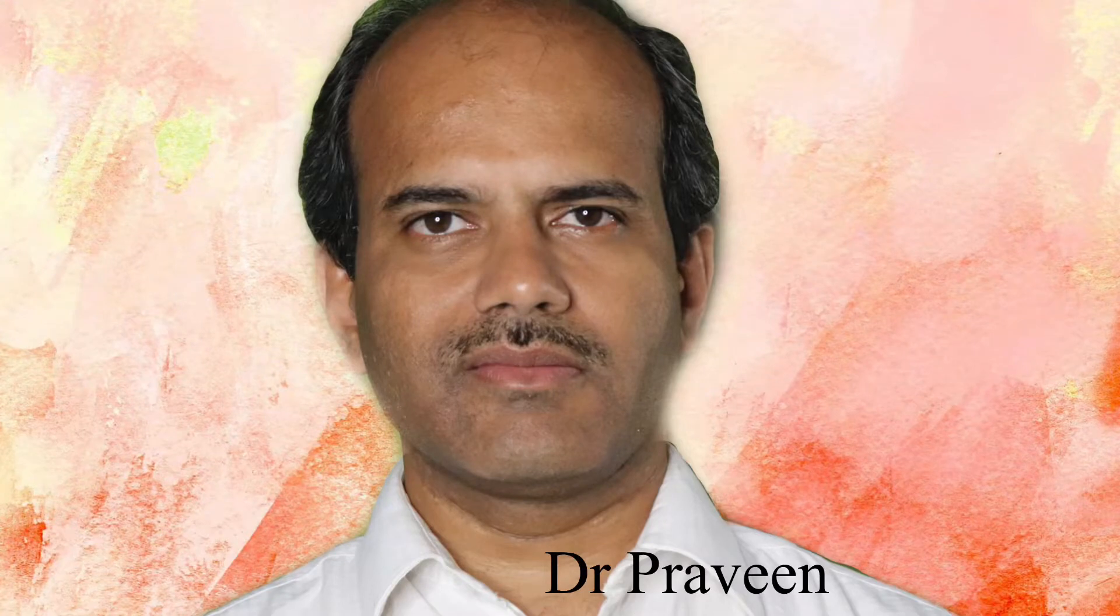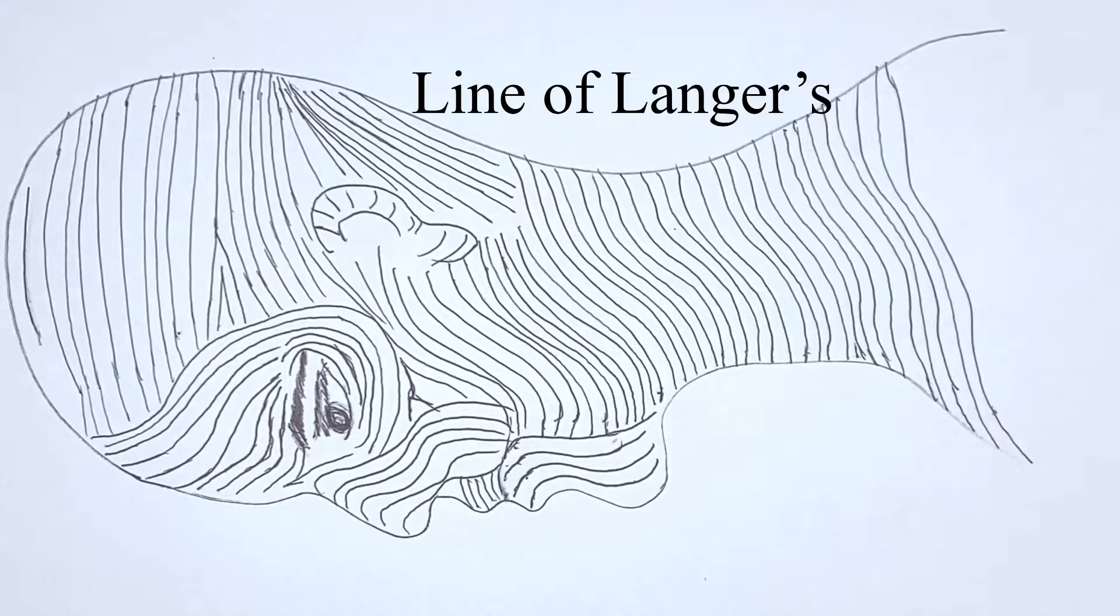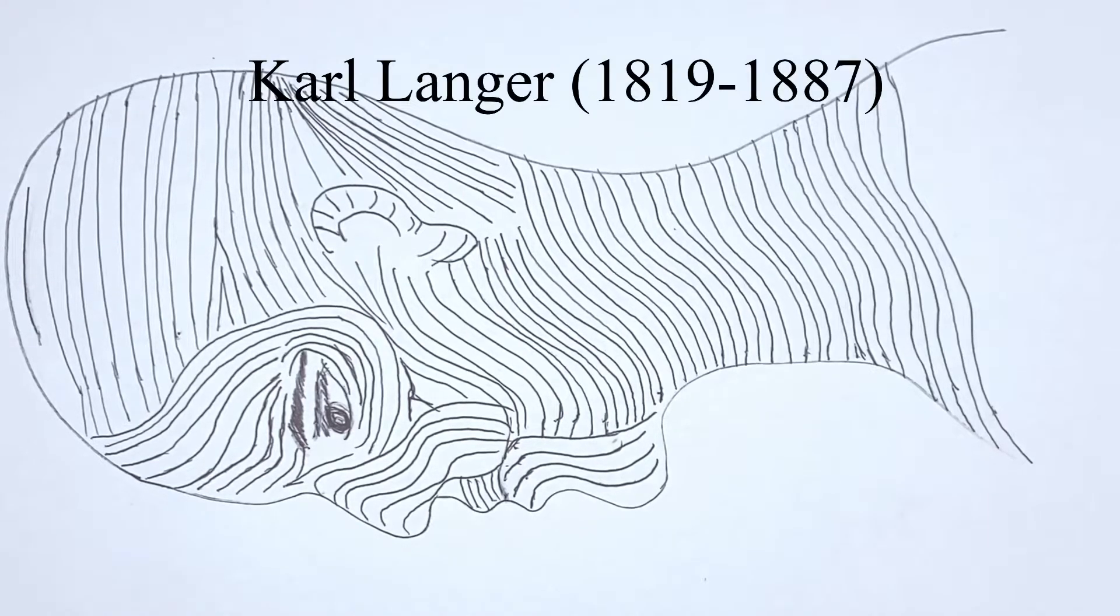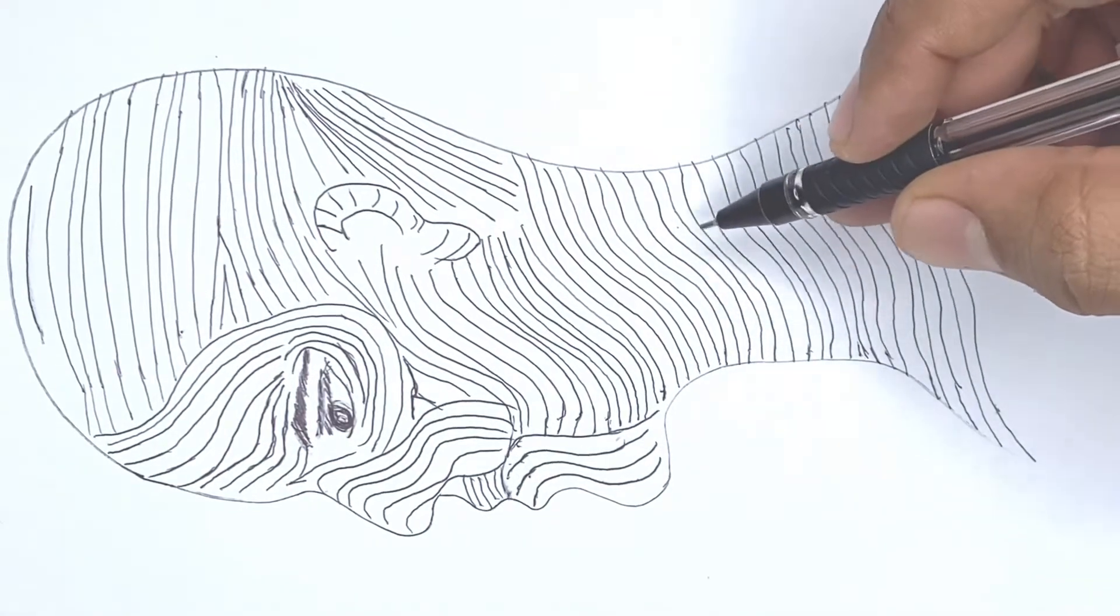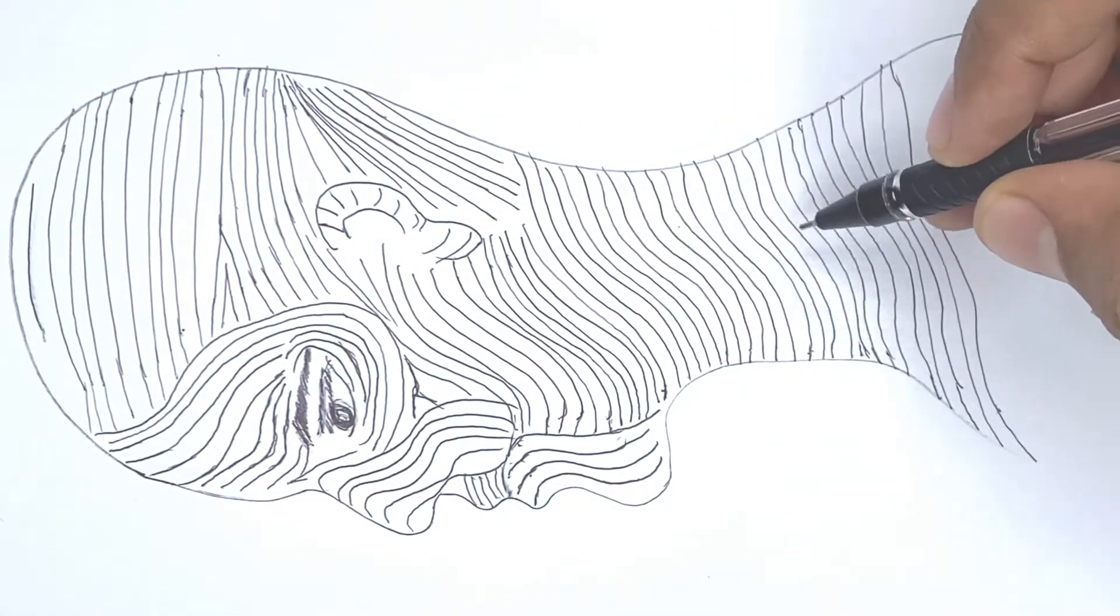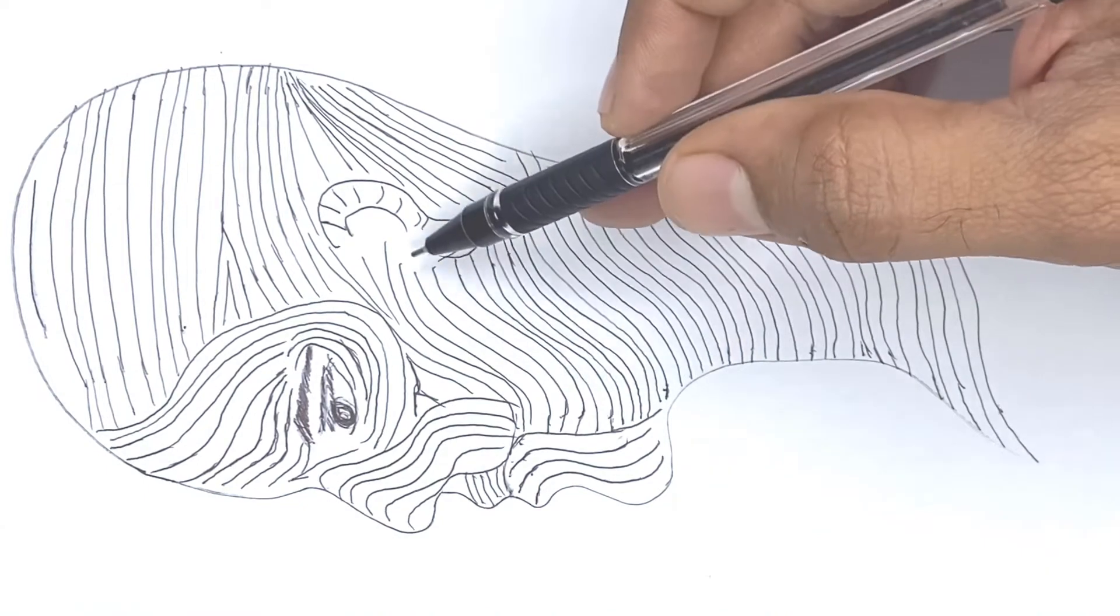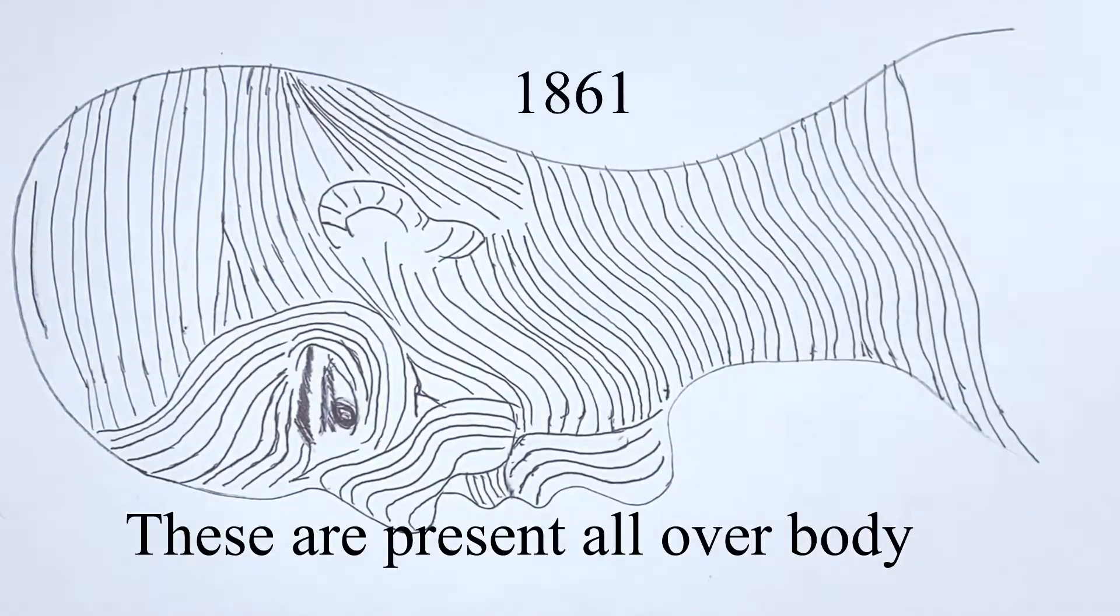Hi, today I'm going to speak about the line of Langer's. These lines of Langer's are named after the Australian scientist called Karl Langer, who identified these normal skin creases in a cadaver in the year 1861.